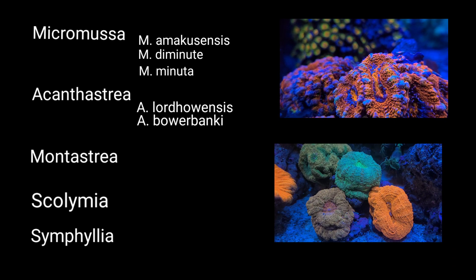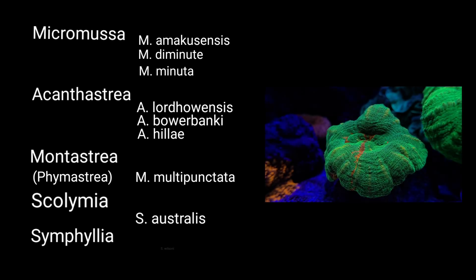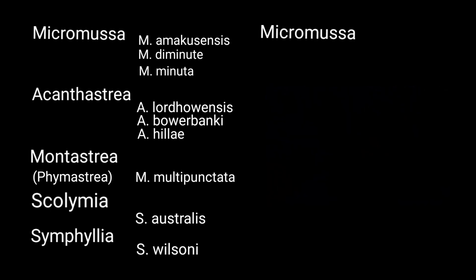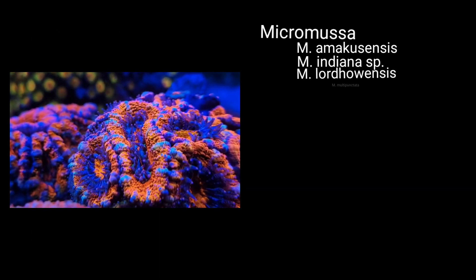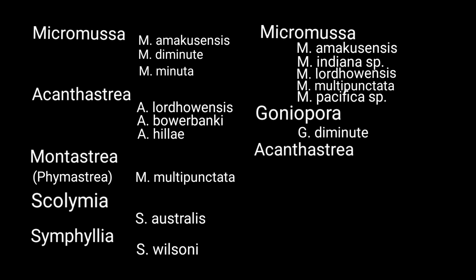Here we will take a look at some of the genera that are within the Lobophylliidae family. Many of these genera have species that are now being rearranged into new classifications. Many different species are now found to not even be related within the same genus. With macro and micro-morphological analysis as well as genetic analysis, we are able to reclassify many species into their rightful genera. Here we see the Button Scolymia is now part of Micromussa, and Goniopora is no longer a Micromussa. We've also lost one of our favorite Acanthastrea to Micromussa — Lordhowensis.